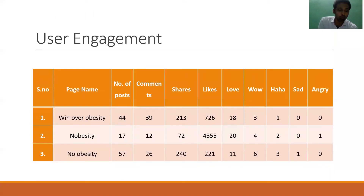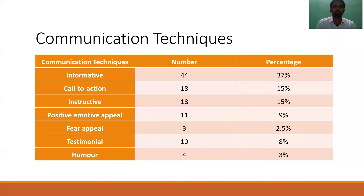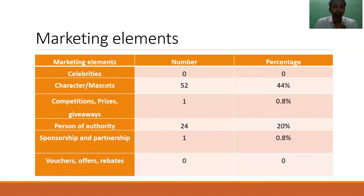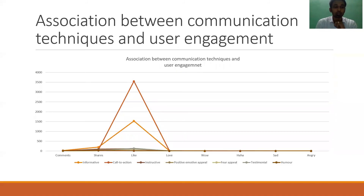Under the results: the No Obesity page, which had fewer posts during the study period, received the maximum user engagement. The majority of sample posts collected were image type, at 60%. The informative communication technique was majorly used in the collected samples — providing information about obesity, its causes, its risks, and its consequences. Characters or mascots were used maximum as a marketing element. Image type posts received the maximum user engagement. Although informative communication posts were majorly used, call-to-action communication received the maximum user engagement. Call-to-action communication technique involves content that encourages users to understand that a particular health behavior can control obesity.